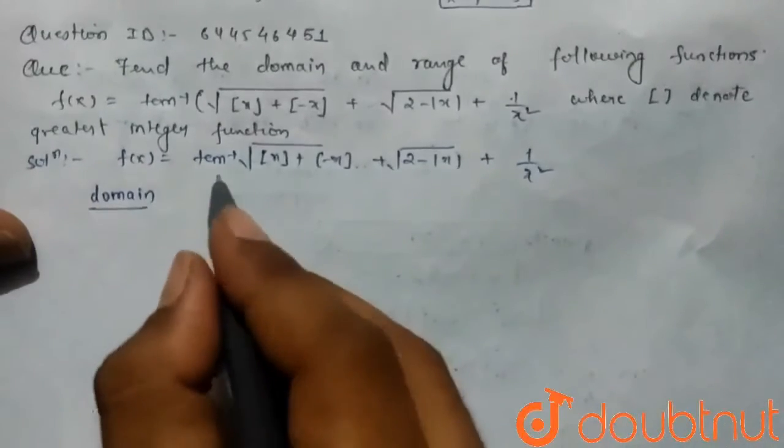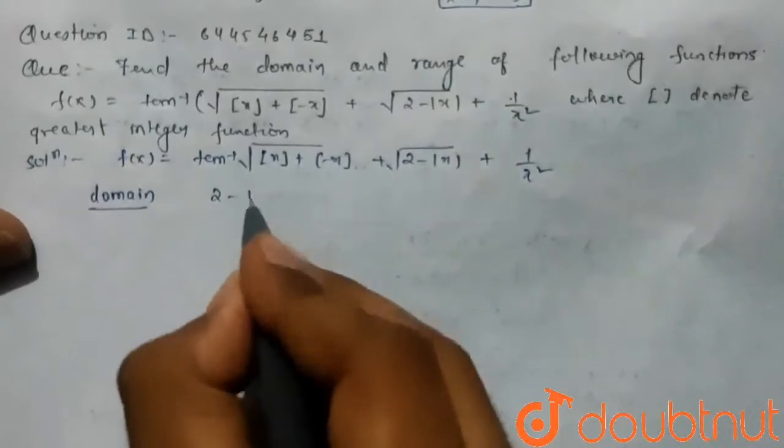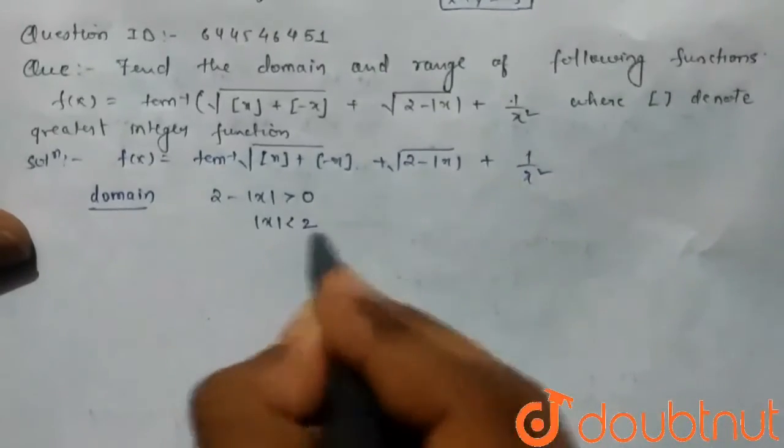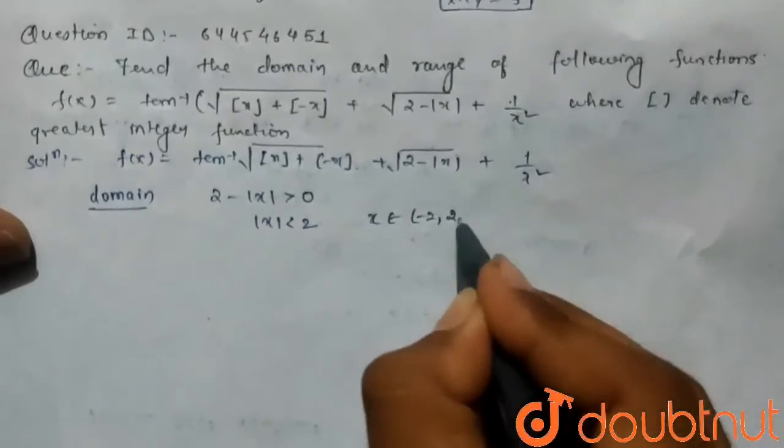So 2 minus mod x should be greater than zero, it means mod x is less than 2. So the value of x is lying from minus 2 to 2.